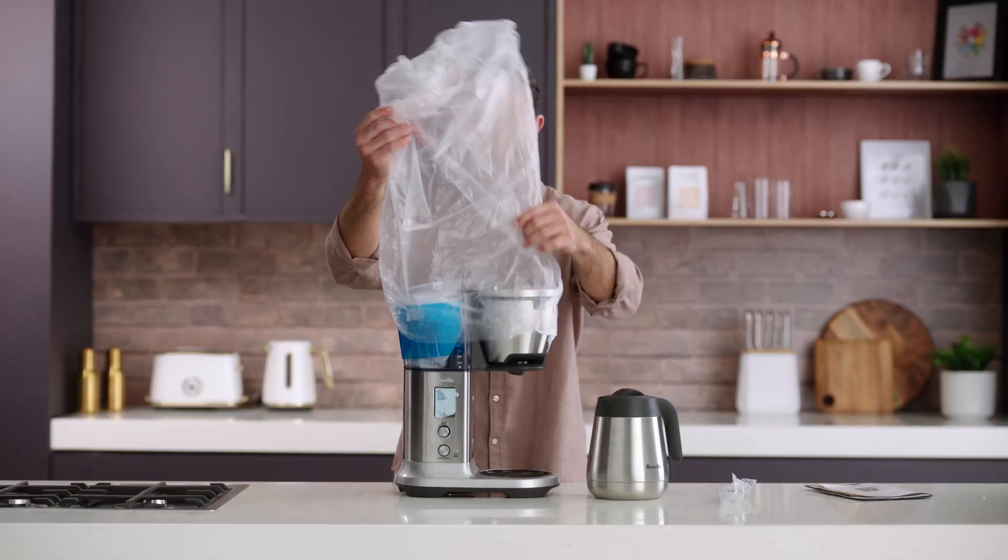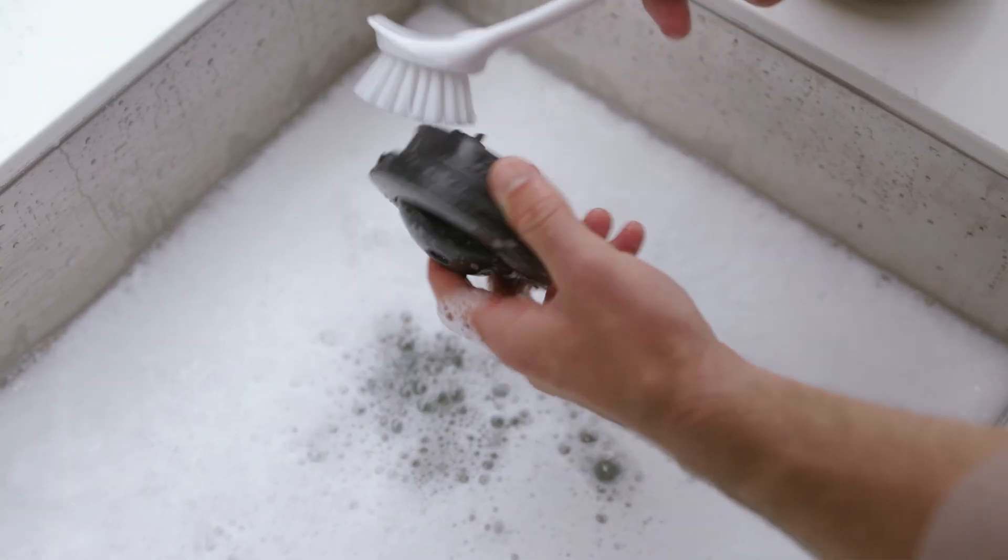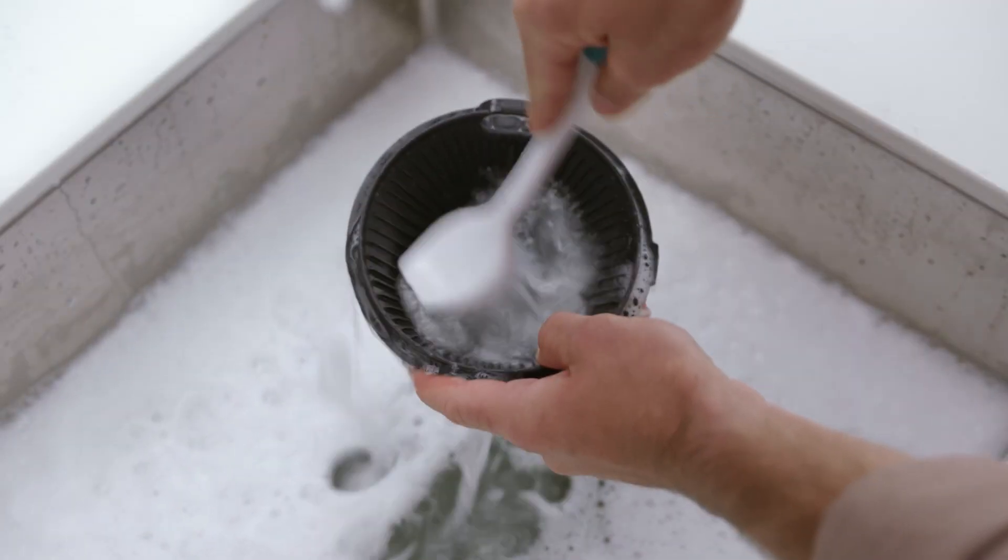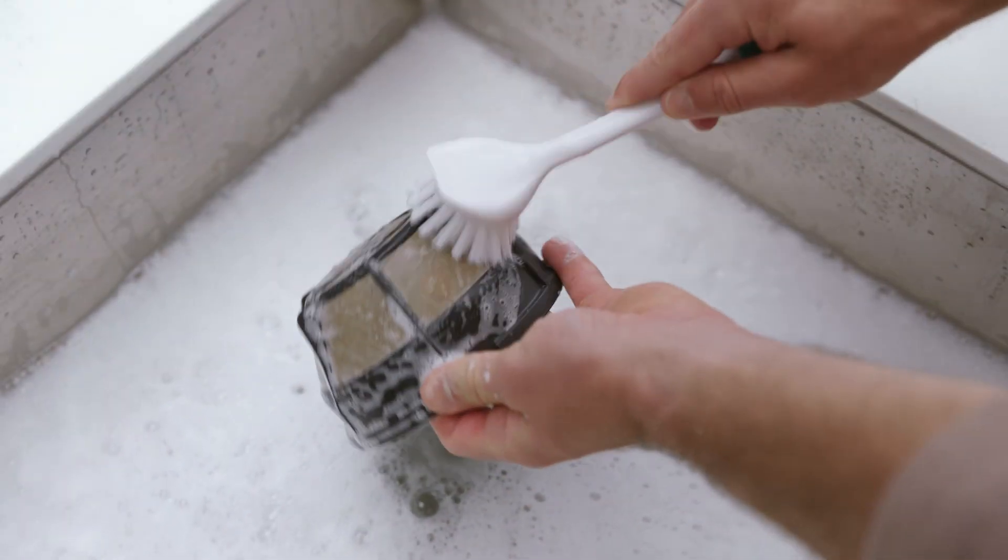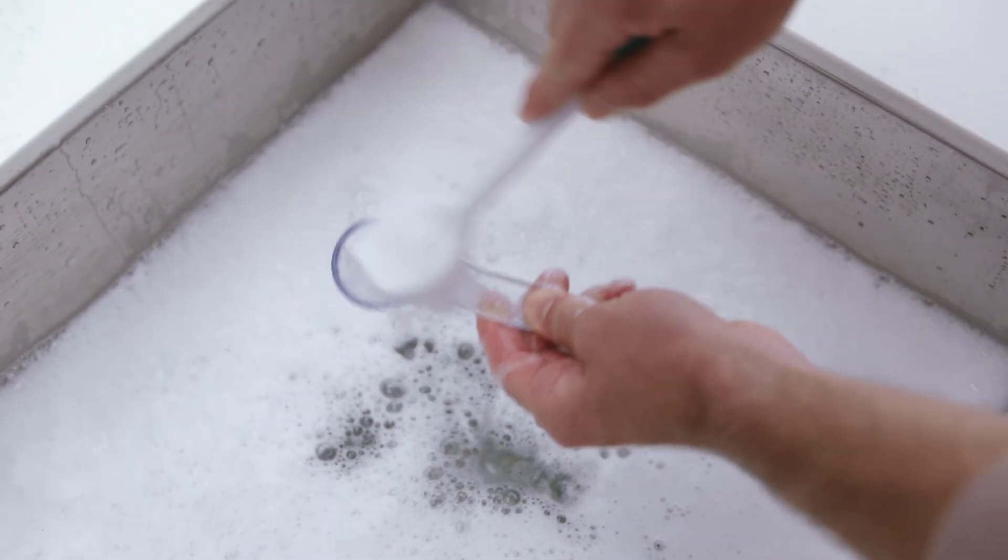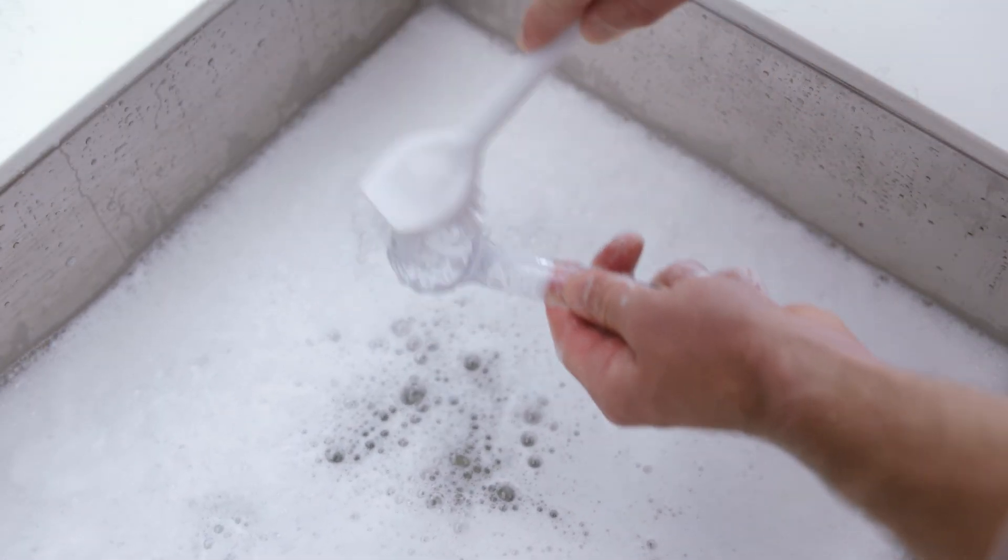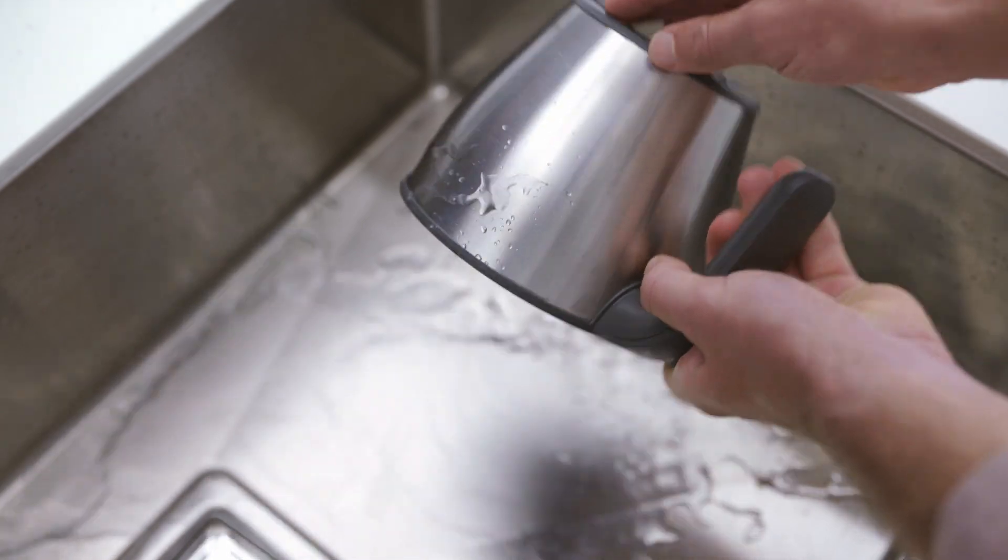Remove all plastic and packaging. Wash the accessories including the lid, brew basket, cone filter insert, mesh basket filter, carafe, and coffee measuring scoop in warm soapy water with a soft cloth or brush. Then it's a quick rinse and dry.